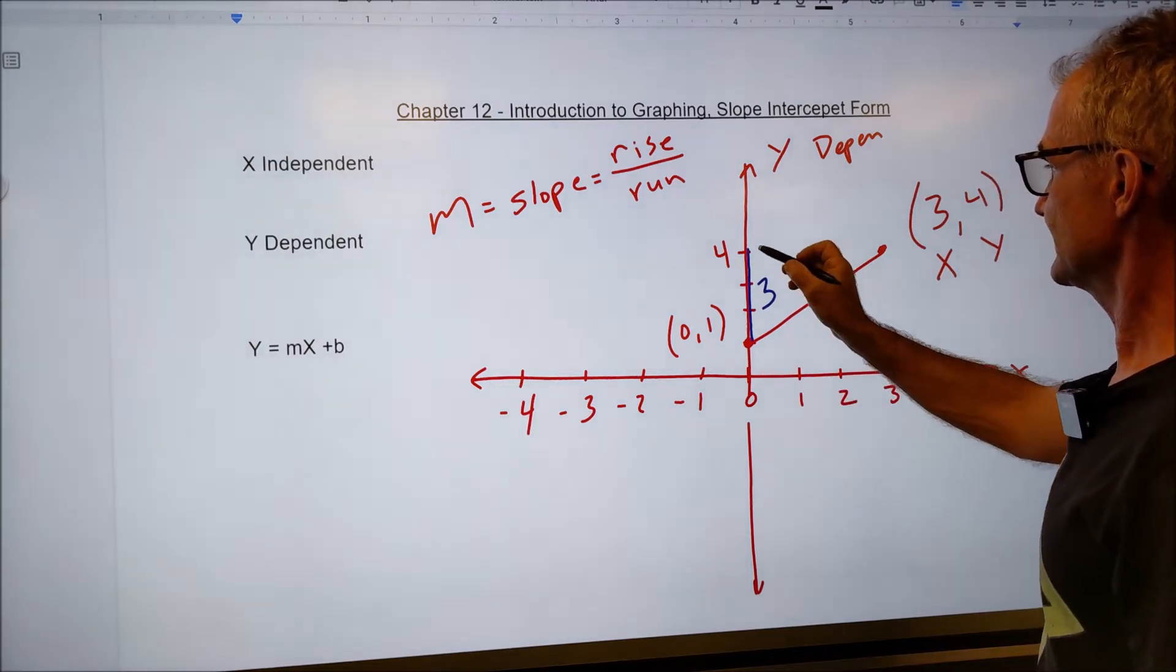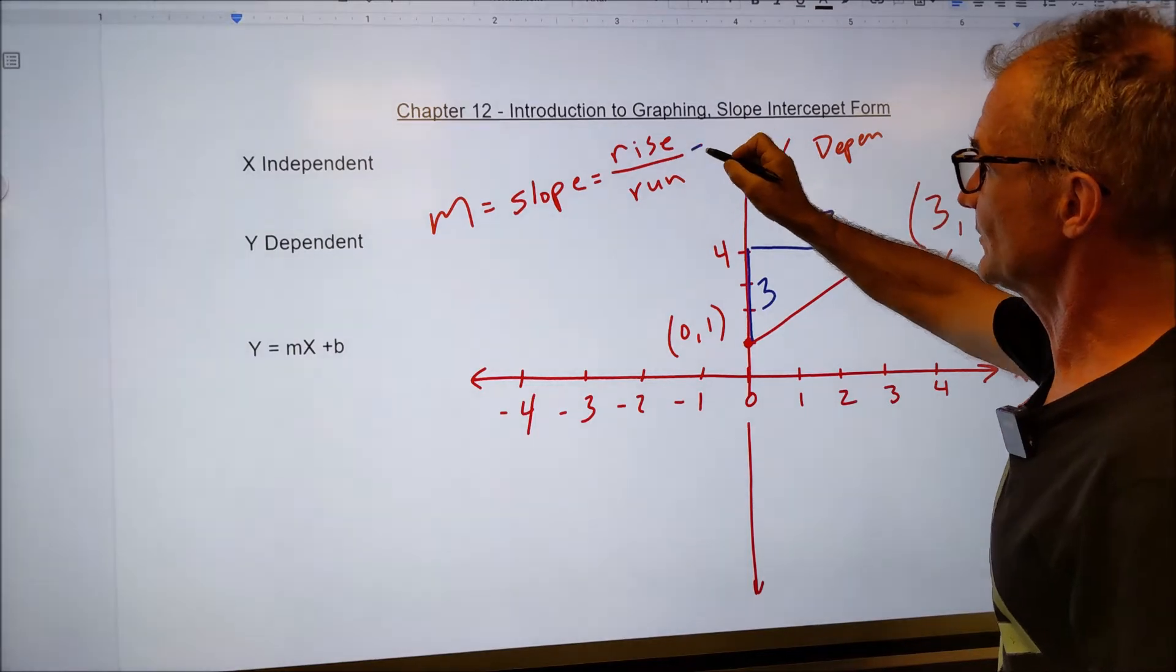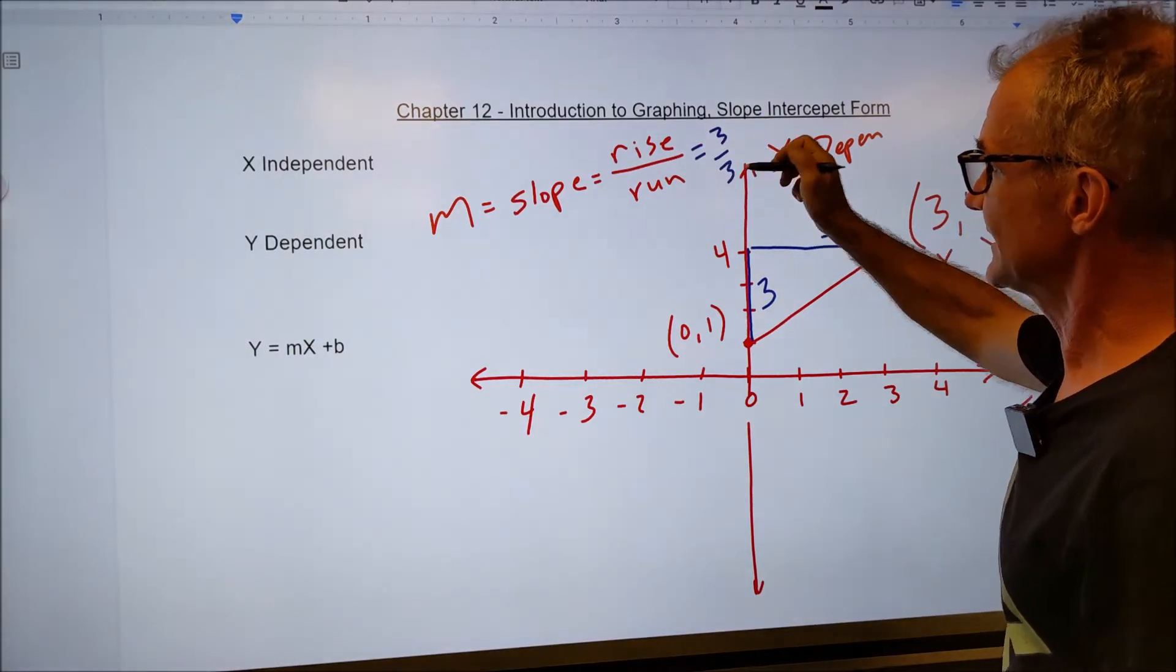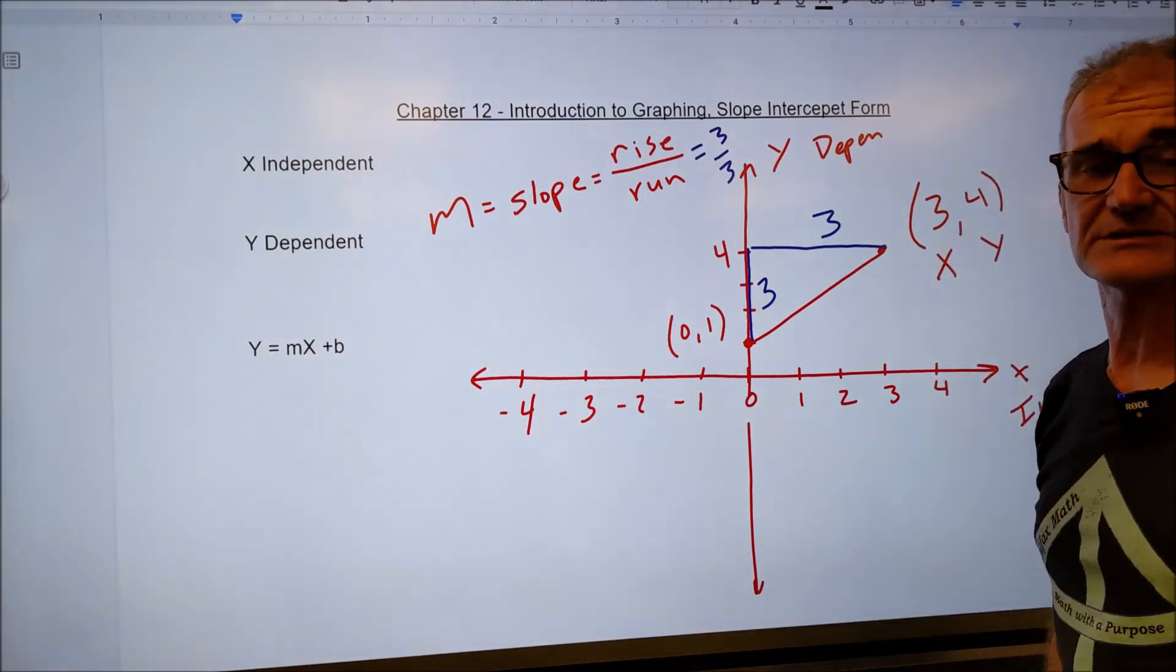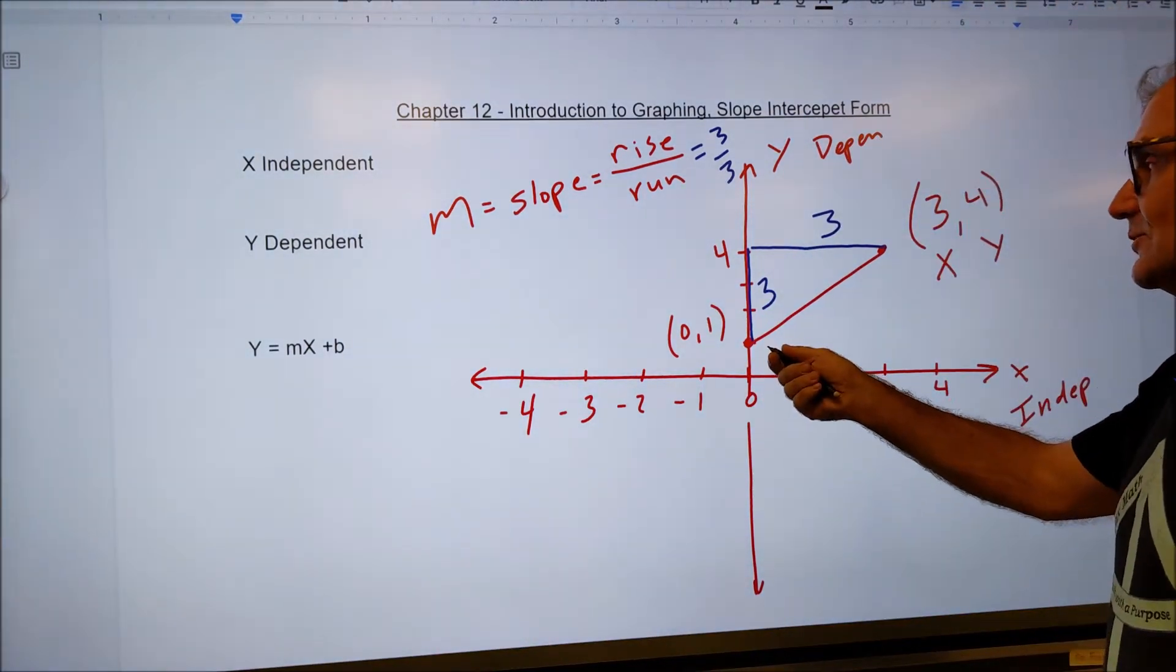My run is one, two, three as well. My slope is three over three. That's a fraction that reduces to one. So my slope in this line is one.